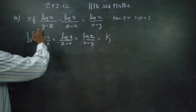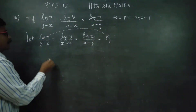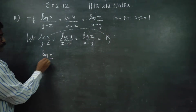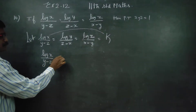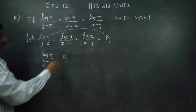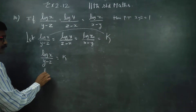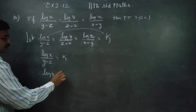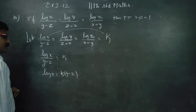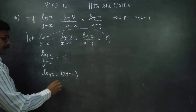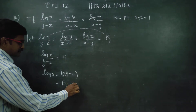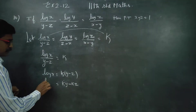Stage 1: log x by (y minus z) is equal to k. Cross multiplying, log x is equal to k into (y minus z). This is my log x.